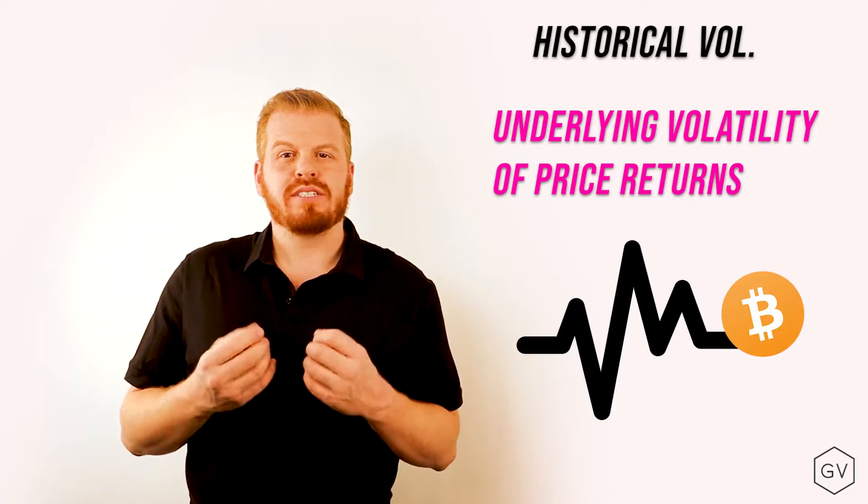Historical volatility is how the underlying asset has actually moved in the past. How volatile was the underlying asset?